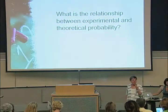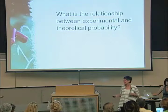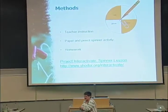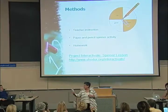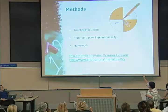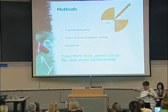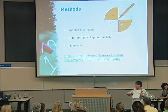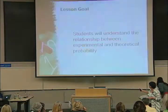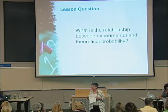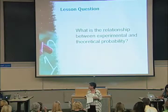You have a worksheet at your disposal. Read the math problem — as you can see on the screen it's very high-tech: a pencil and a paper clip. Put your pencil in the middle, put your paper clip at the point of the pencil, and spin away. Remember, we want to understand the relationship — can you tell me the relationship between experimental and theoretical probability? Work with your partners; we'll give you about three minutes to do this.